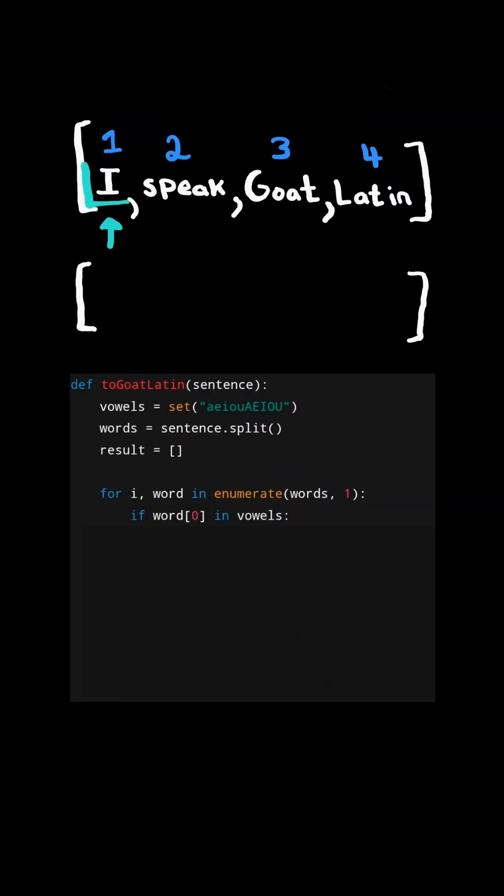We check the first character of the word we are on, and we check if it's in the vowel set. So we will create a new word and append the string M-A.